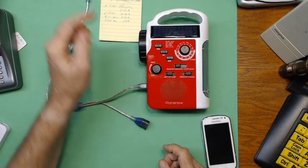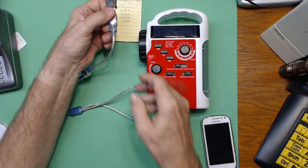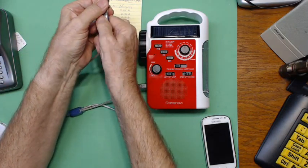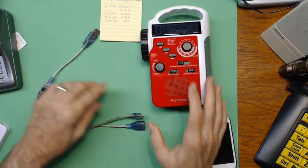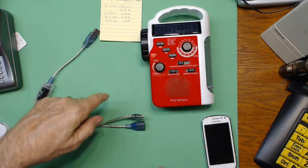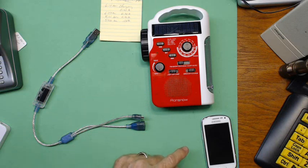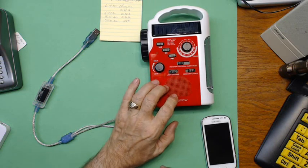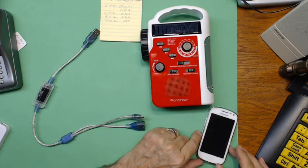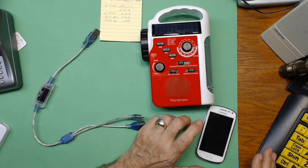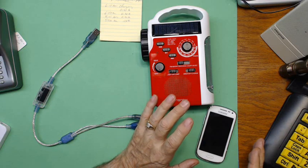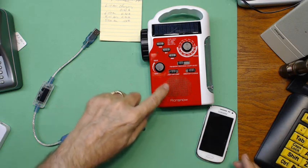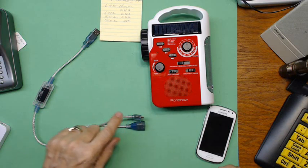What we're going to try to do now is we're going to disconnect this USB port from the computer and disconnect the cable here. Now we're going to go the other way, out of the radio and its internal battery to this cell phone, which is totally discharged.